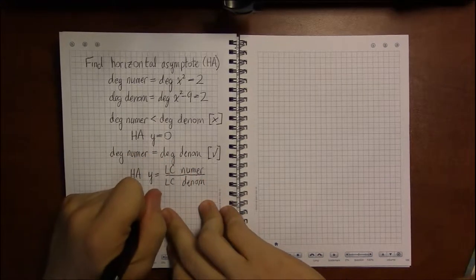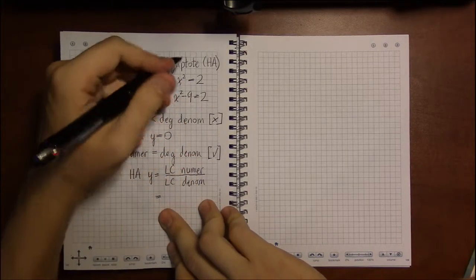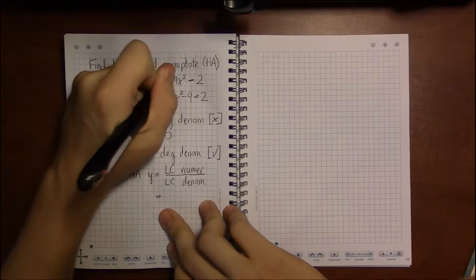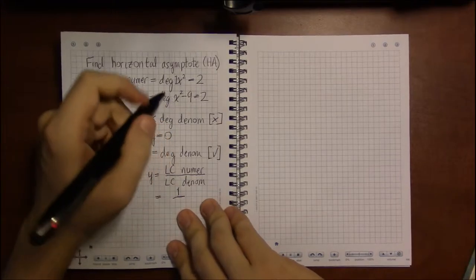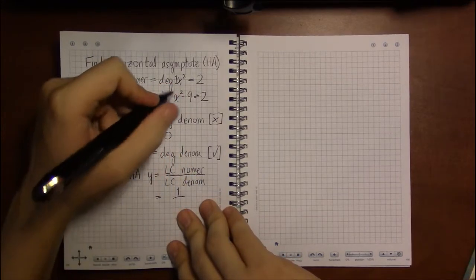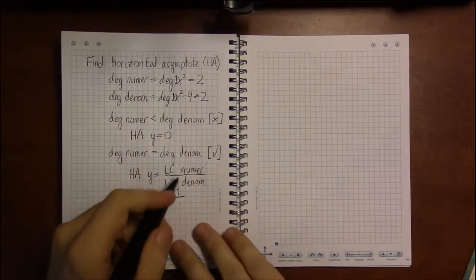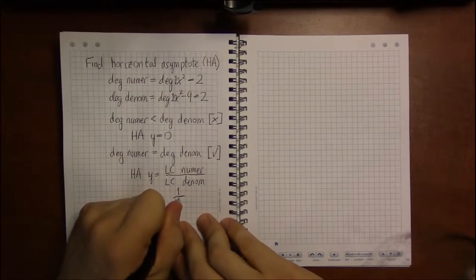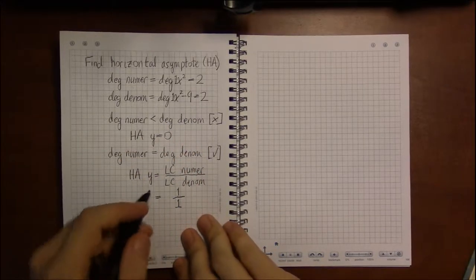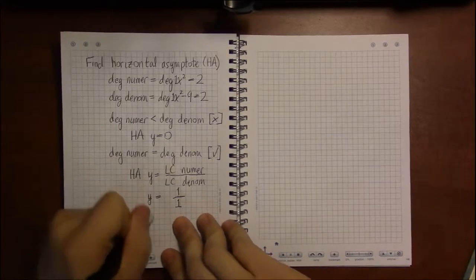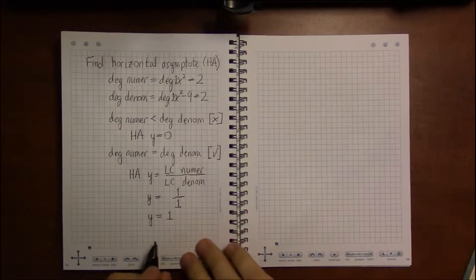And in our case, the numerator, x squared, its leading coefficient is just 1. And the same thing is true of the denominator for this example. Since there's no number, we just put a 1 in front because 1 times anything does nothing. It doesn't change anything. So our horizontal asymptote will be y equals 1 over 1, which is a wordy way of saying y equals 1.